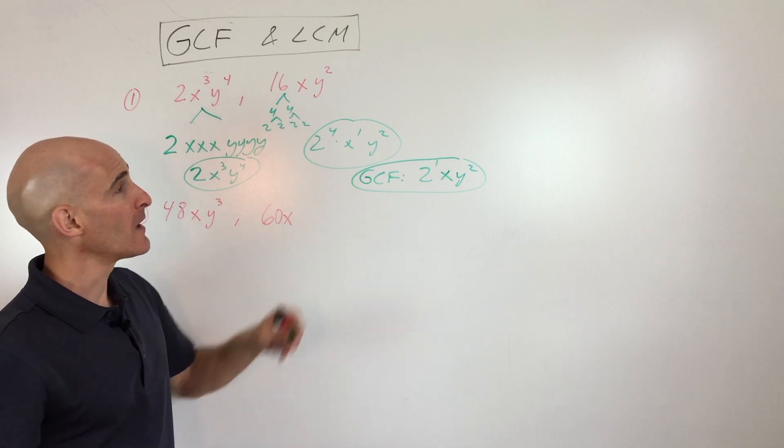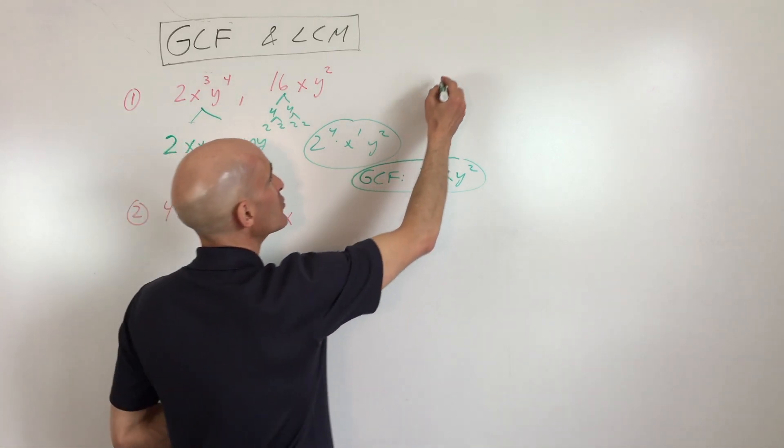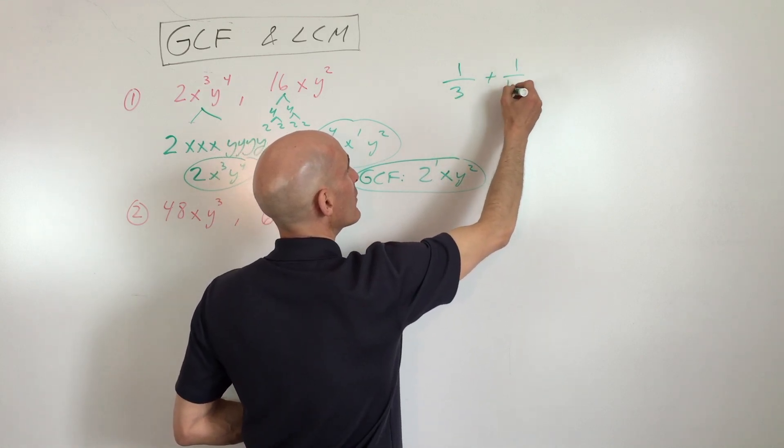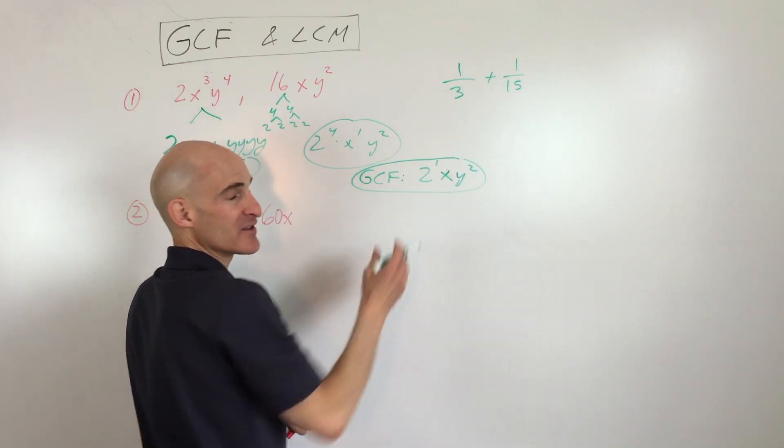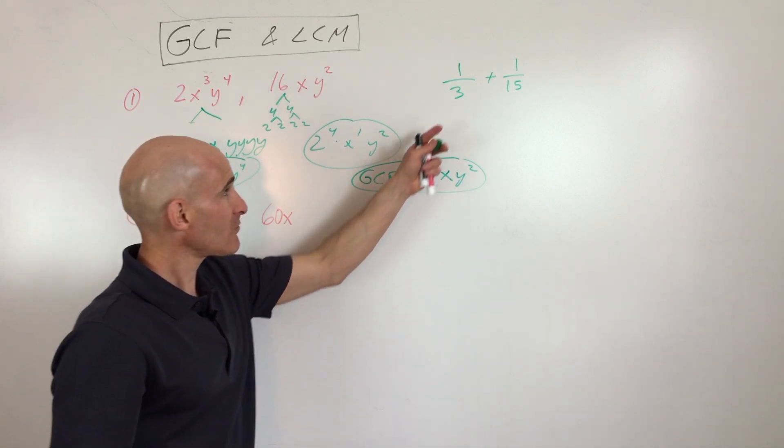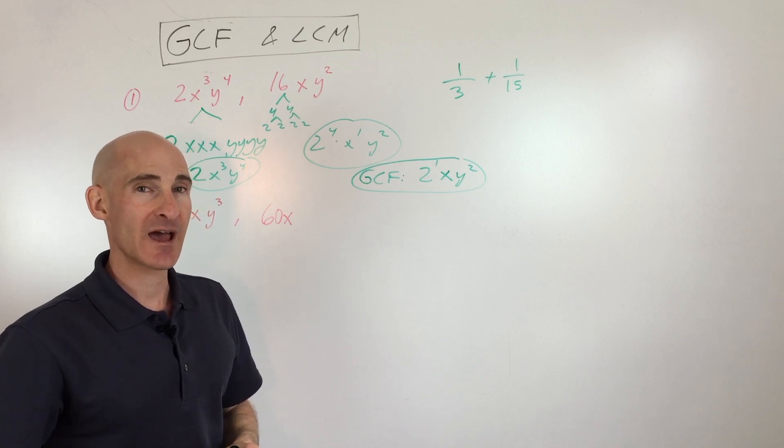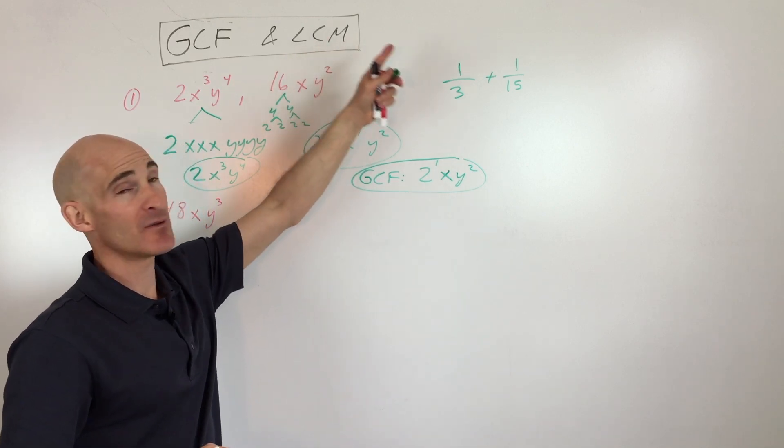Now as far as the least common multiple, you use this technique when you're trying to get common denominators. Like, say you're trying to add 1/3 and 1/15. You're trying to find the smallest denominator so that these both have the same denominator so you can add them together. Now when you find the lowest common denominator, or in this case the least common multiple,